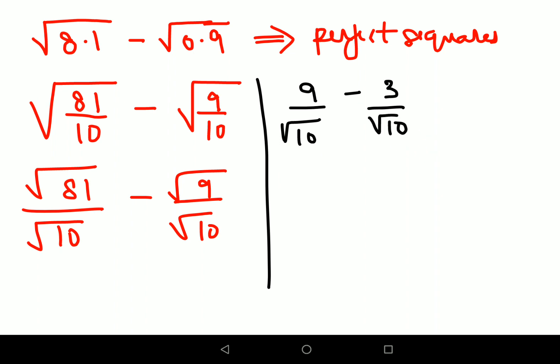Now since the denominators are the same, I can directly subtract the numerator. So 9 minus 3 gets you 6 upon √10.